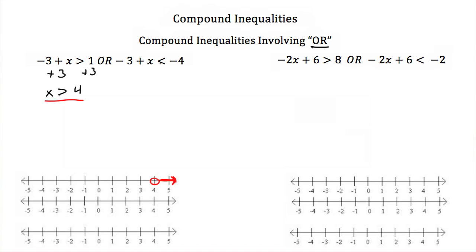The second one: negative 3 plus x has to be less than negative 4. We add 3 to both sides and get x has to be less than negative 1. If we graph that on a number line, we go to negative 1, put an open circle because negative 1 is not a solution, and shade everything less than negative 1, or everything to the left on the number line, because these are all solutions of that second part of our expression.